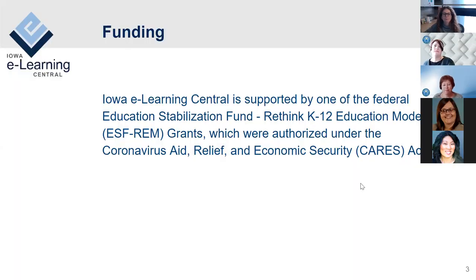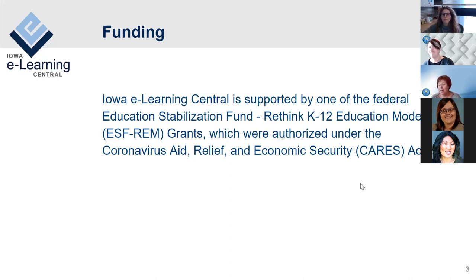Question: where did the funding come from? This is a federal grant — it came out of the CARES Act as part of the Rethink K-12 Education grants, which were specifically available to state departments. It was a very substantial grant, which has allowed us to compensate educators nicely for their work. We've really tried to get the grant dollars into the hands of Iowa educators.